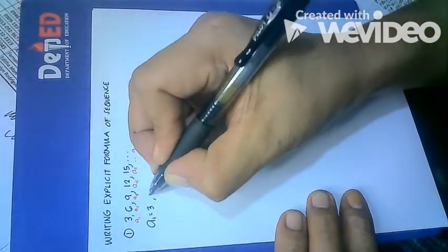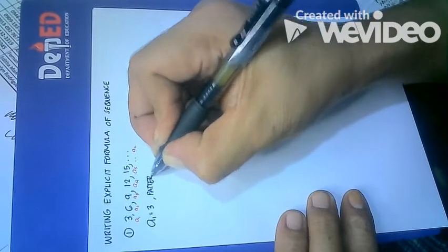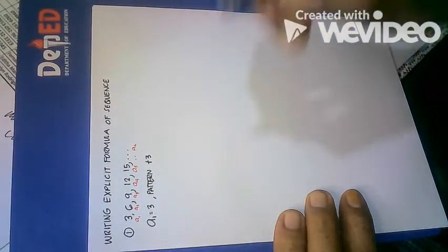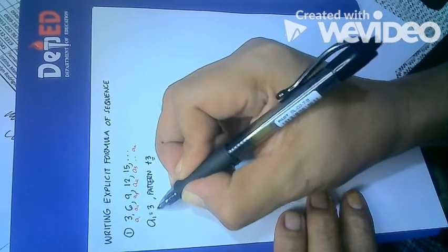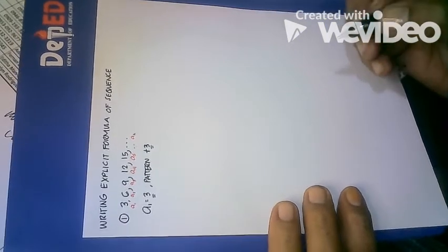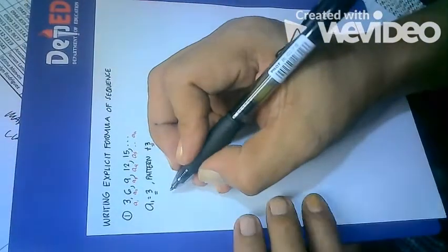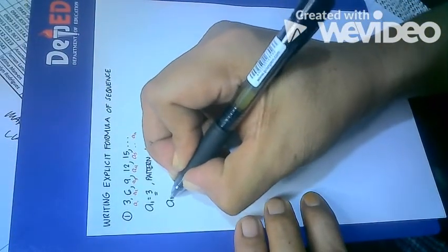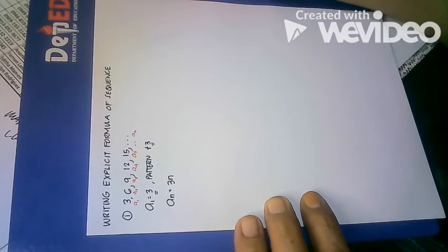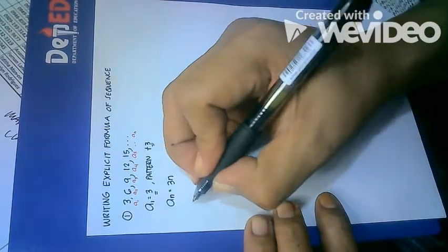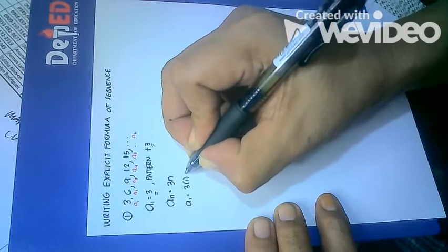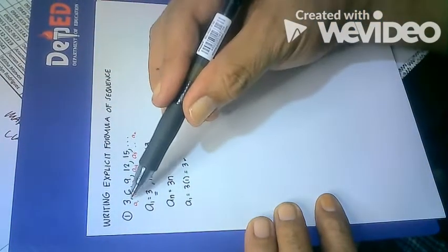If you notice, the pattern is we just add by 3. Take note that the pattern — adding by 3 — is equal to your first term a1. So directly you can write the formula as a_n = 3n. Let's check: solving for a sub 1 equals 3 times 1, which equals 3. Check — the first term is 3.